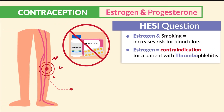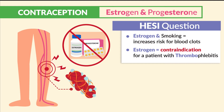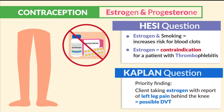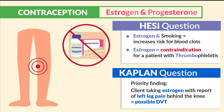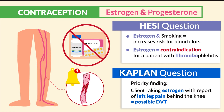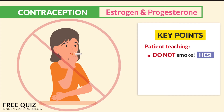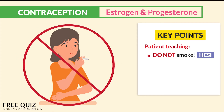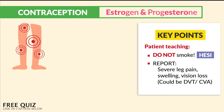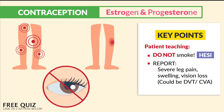Estrogen is contraindicated for a patient with thrombophlebitis — that was the second question mentioned by HESI. Thrombophlebitis is a blood clot causing vein inflammation and irritation. Kaplan mentioned a priority finding is a client taking estrogen with reported left leg pain behind the knee, reported as a possible DVT. For key points and patient teaching: do not smoke, as mentioned by HESI, and report severe leg pain, swelling, as well as vision loss — these could indicate a DVT or even a CVA, a stroke.